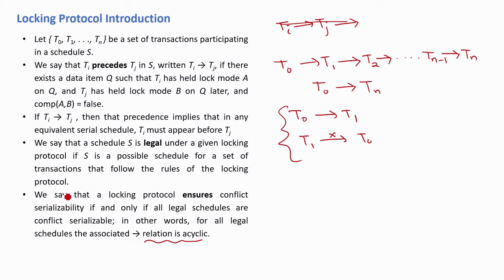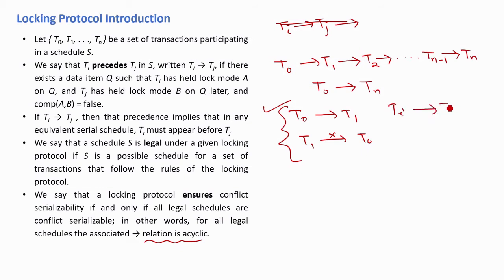A locking protocol ensures conflict serializability if and only if all legal schedules are conflict serializable — that is, conflict equivalent to a serial schedule. For all legal schedules the associated precedence relation is acyclic: if t0 precedes t1 which precedes t2 up to tn, then t0 precedes tn; and if ti precedes tj then tj cannot precede ti.